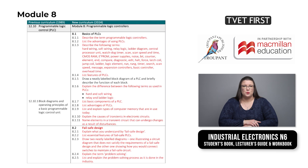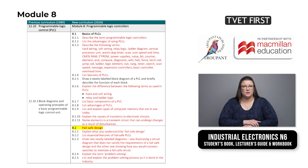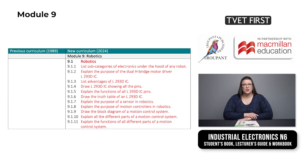Module 8 tackles programmable logic controllers. This module includes updated material for PLCs and a new section on fail-safe design. Module 8 has 22 learning outcomes, of which 16 are new. The older learning outcomes have all been specified in more detail. Module 9, Robotics, is a new addition to the curriculum. It includes 11 learning outcomes which are specific to various aspects of robotics and motion control systems.